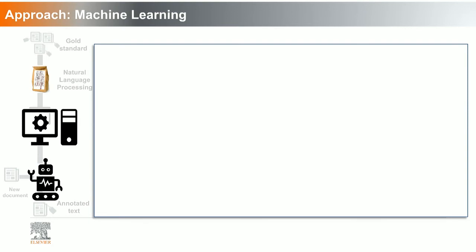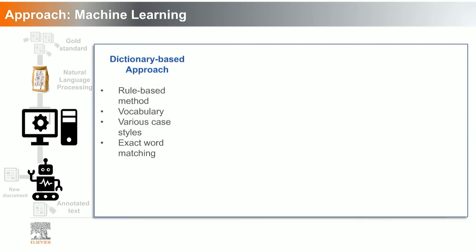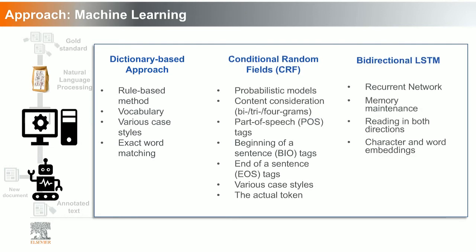There are several approaches in machine learning models. One approach is using dictionaries — you feed in a dictionary of words into your algorithm, and it identifies terms or entities specifically mentioned in that dictionary. You can also create your dictionary from a corpus. Usually it's exact word matching, but fuzzy matching is also possible. Another approach is conditional random fields, which is a probabilistic, sequence-based model where you use features like part of speech, BIO tagging, and the actual token itself.